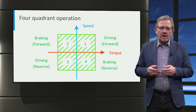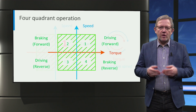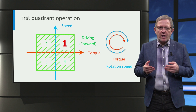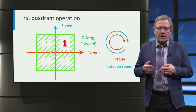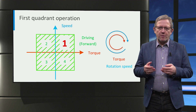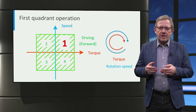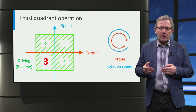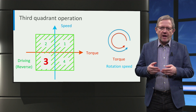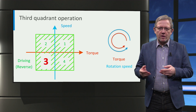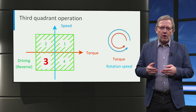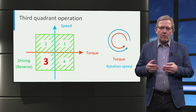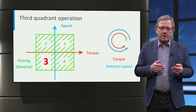For example, first quadrant operation is when the motor has both positive polarity torque and speed, and this results in the forward driving of the car. In case of third quadrant operation, the motor has both negative polarity torque and speed, and this results in a reverse driving of the car — in simple words, the car moves backwards.